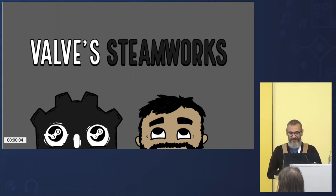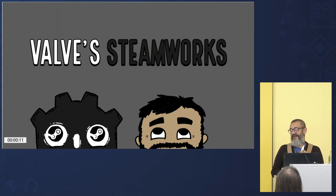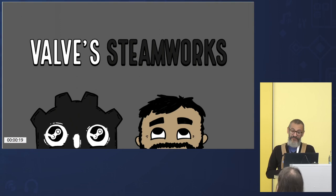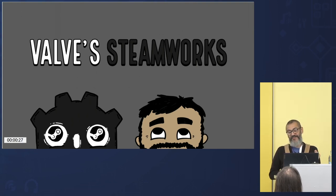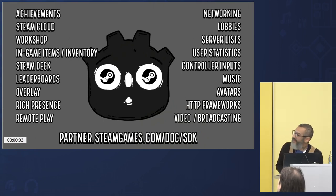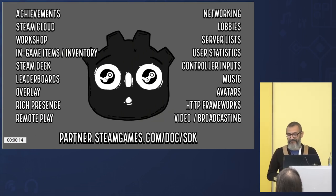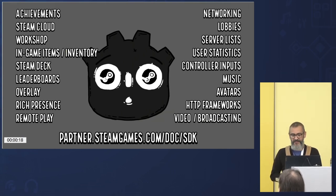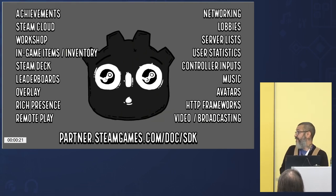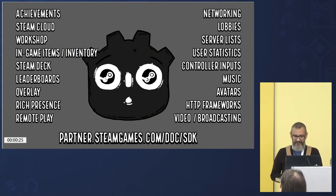That brings me to Valve Steamworks. In case you don't know, it is an API system for developers to integrate various features into their games and interact with Steam's client in different systems. This can include achievements, saving files to Steam Cloud, using Workshop for game mods, selling in-game items with inventory, interacting with Steam Deck, leaderboards, rich overlay, et cetera. I'm not going to go into the full list, but there are a lot of features — about 24 classes packed full of functions and goodies — and you can read about them on Valve's Steamworks SDK website or our documentation website.